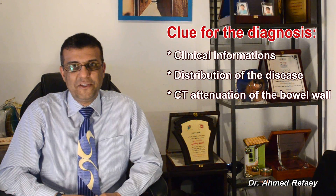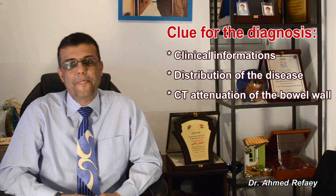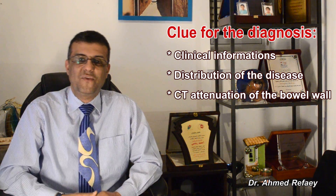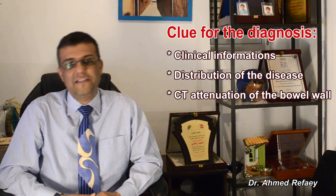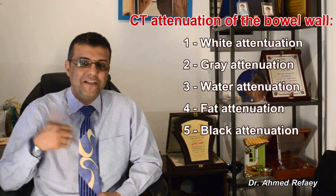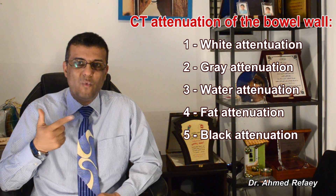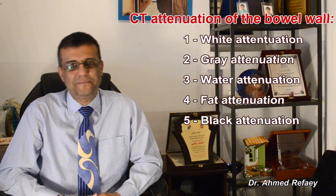To summarize: colitis can be diagnosed using three keys — number one, clinical information, especially the age of the patient; number two, distribution of the disease, as some types of colitis have very specific distribution patterns; and number three, bowel wall attenuation, which is classified into five categories: white, gray, water, fat, and black attenuation. Thank you very much.